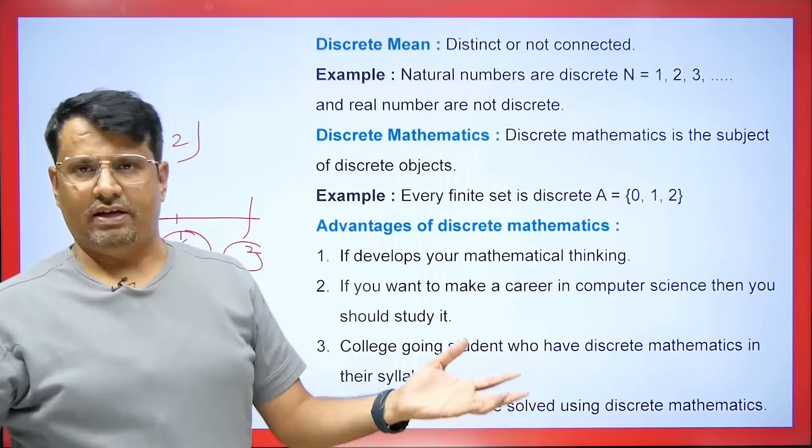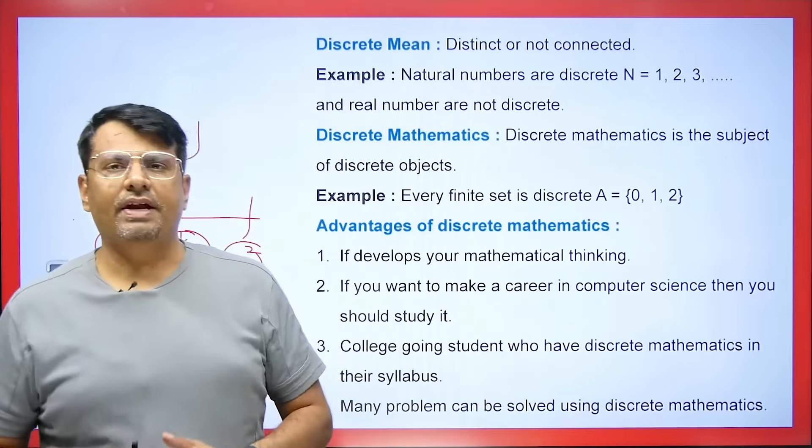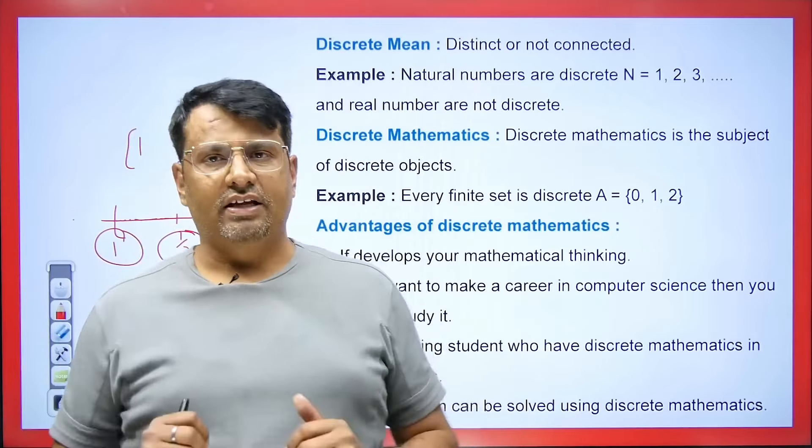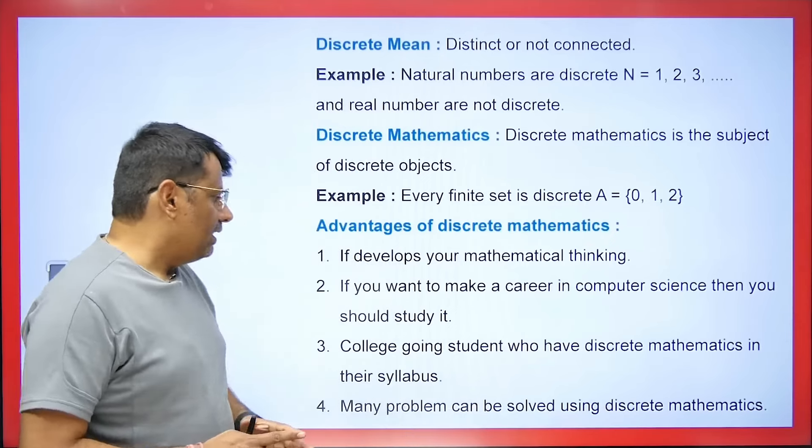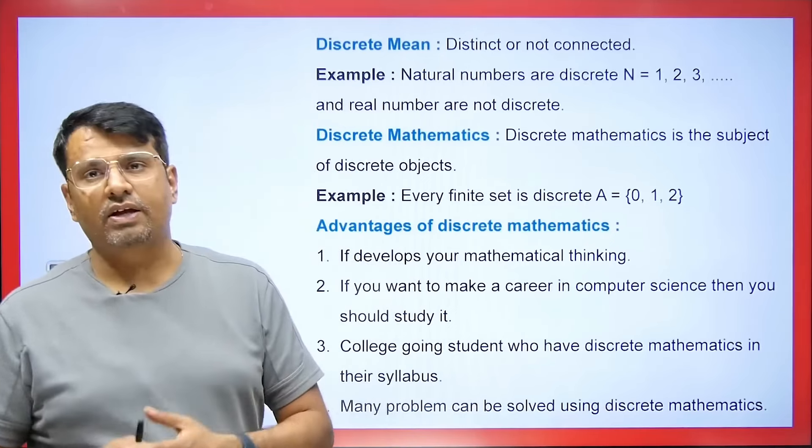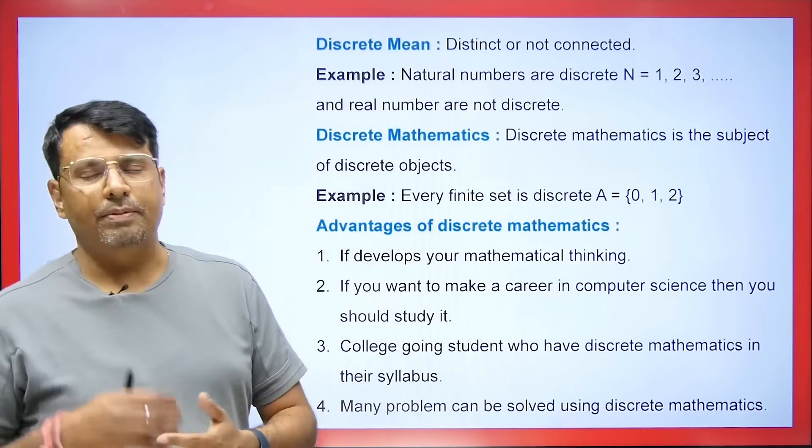What is discrete mathematics? Discrete mathematics is the study of objects — we can have objects of any type: it can be vowels like a, e, i, o, u, or element-wise numbers, or something else. Ultimately when we talk about discrete mathematics, we talk about finite sets. This subject enhances your mathematical thinking. If you want to make a career in computer science, this is a very important subject — very useful in coding. For college students studying engineering, BSc, BCA, or MCA, there is a complete course of discrete mathematics.